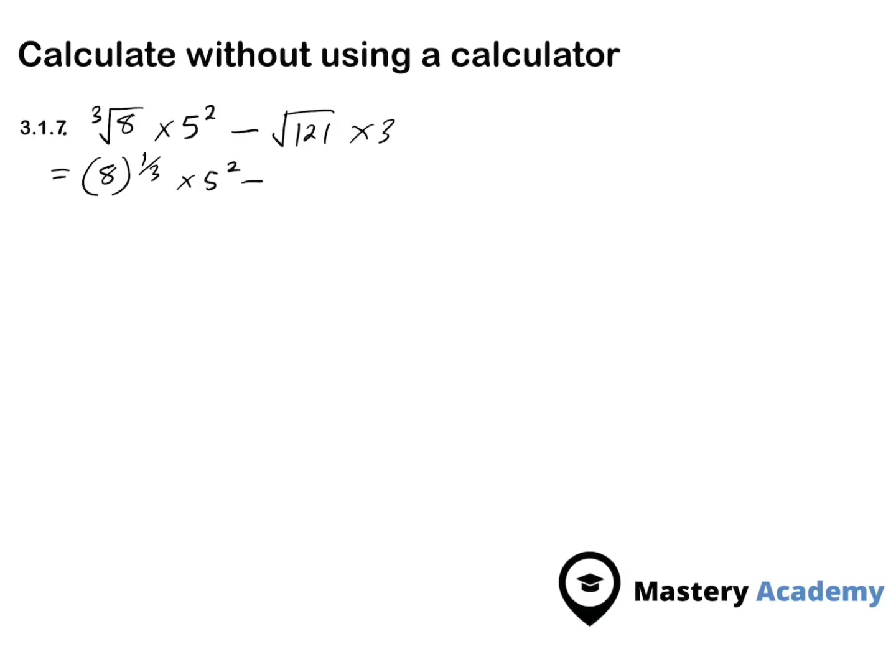Now, first of all, let's start with the square root. The square root is the same as to the power of 1 over 2 multiplied by 3. So, we change this square root sign into to the power of 1 over 2. This is an exponent, by the way.